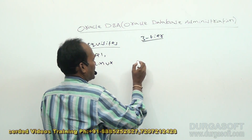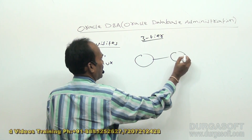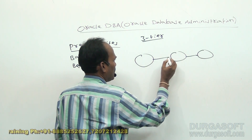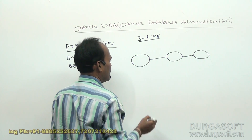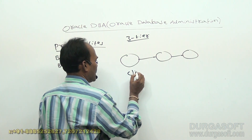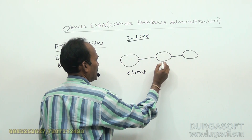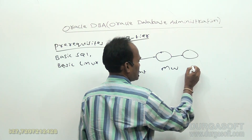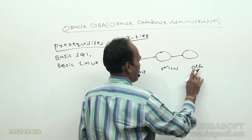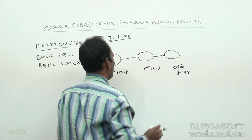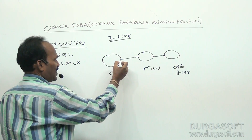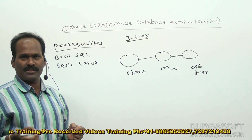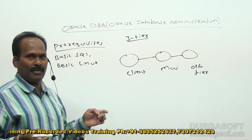In the 3-tier architecture, first the client system will come, then middleware, and then the database tier. The first tier is called the client-tier, the second is called middleware, and the third is the actual DB-tier. The client-tier is normally developed using front-end technologies like HTML, DHTML, JavaScript, and VBScript.